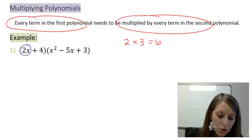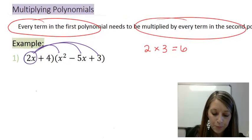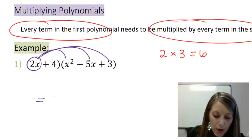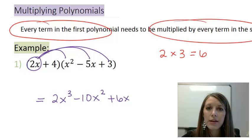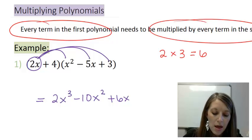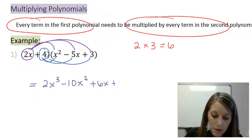So, I'm going to start this by taking my 2x and distributing it through. And then I'm going to take my four and distribute it through. So, 2x times x squared gives me 2x to the third. 2x times negative 5x gives me negative 10x squared. And 2x times 3 gives me 6x. So, that gives me half of my terms when I've distributed half of my first polynomial through. Now, let me distribute my 4 all the way through. So, 4 times x squared gives me a 4x squared. 4 times negative 5x gives me a negative 20x. And 4 times 3 gives me a 12.